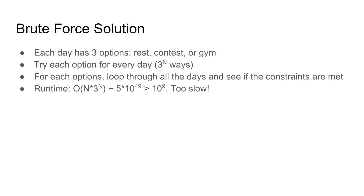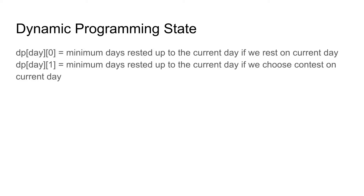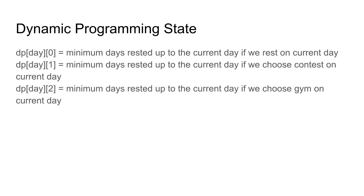This is why we need dynamic programming. We have to first define our DP state. Since each day we can choose rest, contest, or gym, we will have three different states. dp[day][0] is the minimum days rested up to the current day if we choose rest on the current day. dp[day][1] is the same but for doing a contest on the current day. dp[day][2] is the same but for going to the gym on the current day. We declare dp of size 103 by 3, since n is up to 100 and the states are 0, 1, and 2.